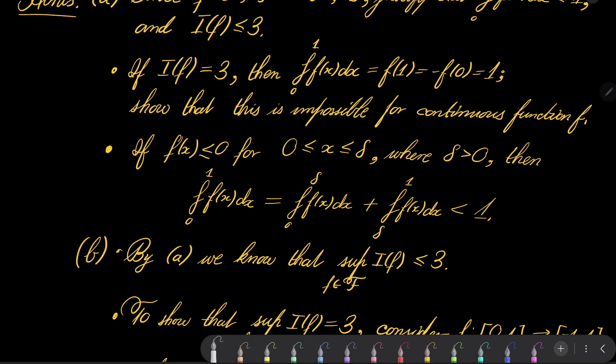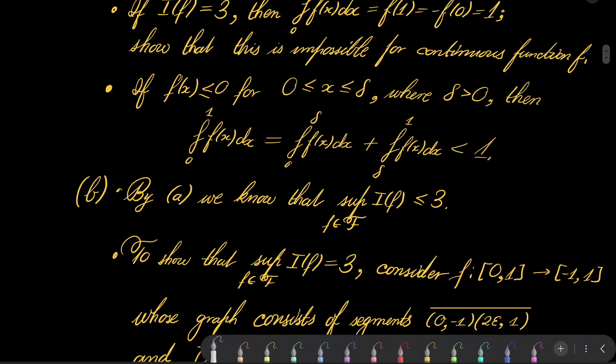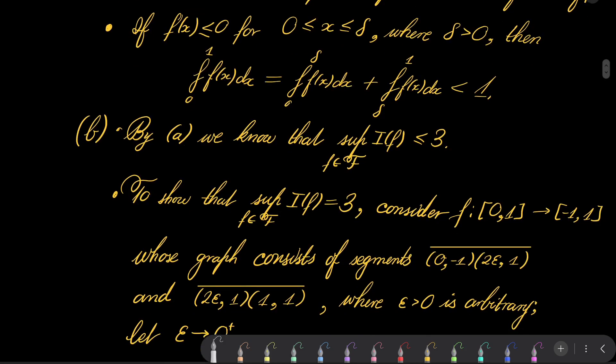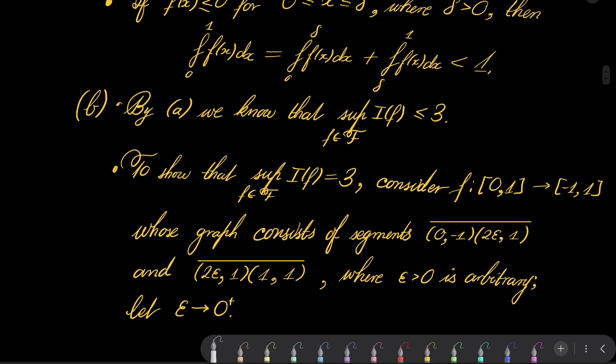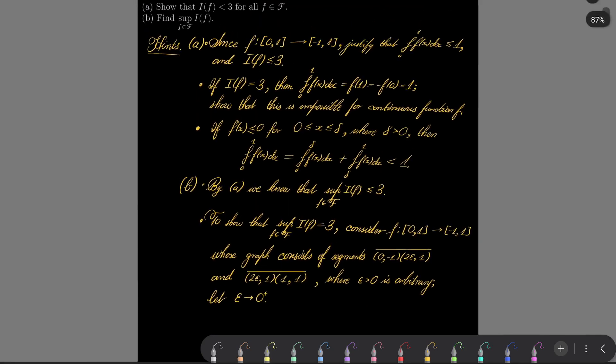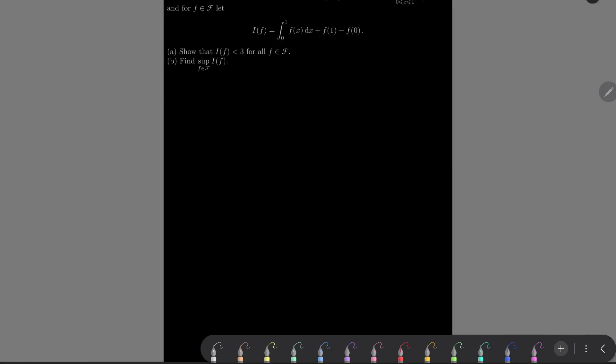Now we wish to exclude this possibility and show that if I(f) equals 3, then our integral, f(1), and minus f(0) all must equal 1, and show that this is impossible for continuous function f. Because continuous function, since it starts at -1, it must be less than or equal 0 on some non-zero, non-trivial interval. And just write the integral from 0 to 1, split it into two integrals from 0 to delta and from delta to 1, and show that this must be less than 1.